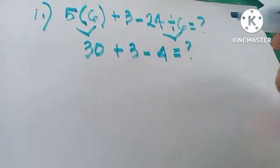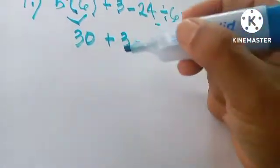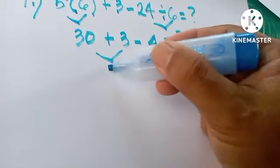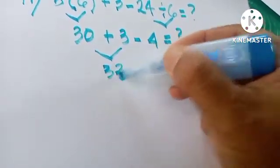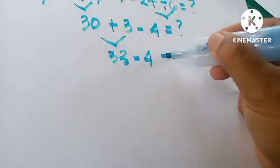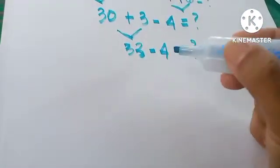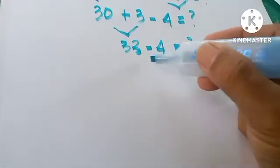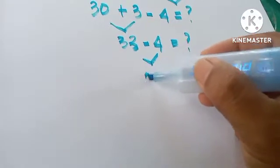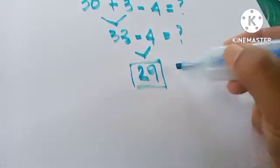The two remaining operations are addition and subtraction. So we add 30 and 3, giving us 33, then 33 minus 4 equals 29. So 29 is our answer.